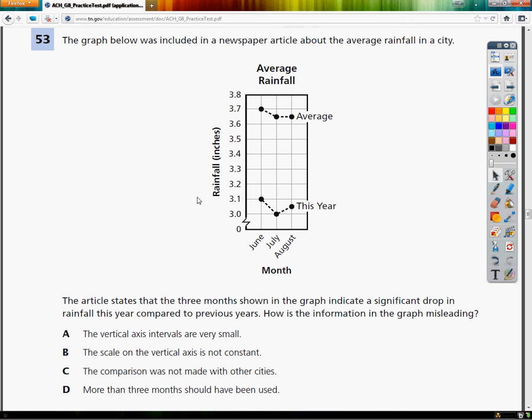So A says the vertical axis intervals are very small. If I look here, I can look at those intervals and see if they're too small to determine whether or not this is a misleading graph. If you see the difference between, even look at the smallest versus the largest, even though they're not even the same months, 3.7 and 3.0, we're only talking about 0.7 inches of rain, which is not very much in terms of the average rainfall. That's not a lot.